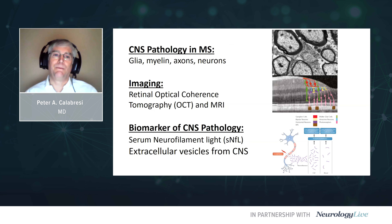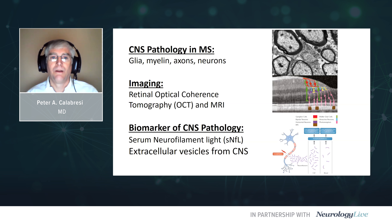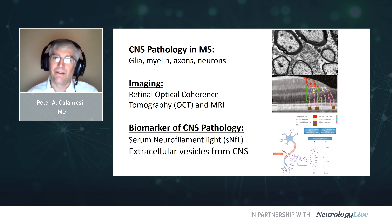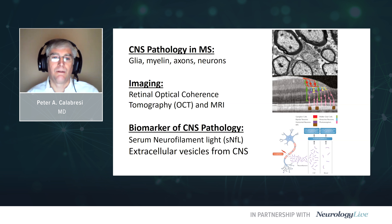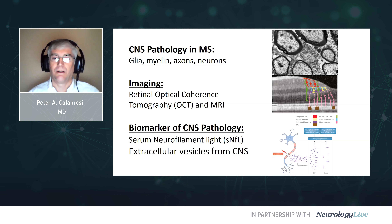I'll divide the talk into three parts. First, we'll talk about CNS pathology, because if we're going to understand how progressive MS works, we need to understand what are the cells and what kind of damage is happening. We'll focus on the different glia, the myelin, and how axons and neurons actually degenerate. Then I'll move on to imaging — what we've learned from MRI, but also retinal optical coherence tomography, or OCT. And finally, we'll talk about promising biomarkers, including serum neurofilament, and more recent work on extracellular vesicles that are enriched from cells in the central nervous system.